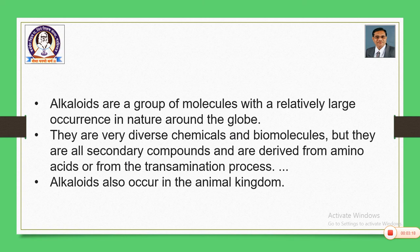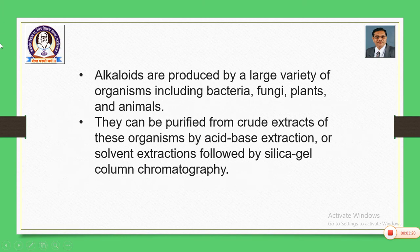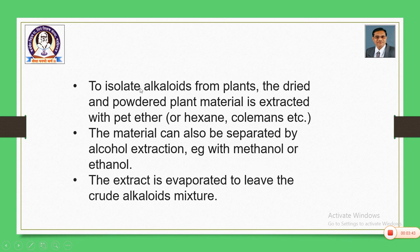Alkaloids also occur in animal ganglia. They are produced by a large variety of organisms including bacteria, fungi, plants, and animals. They can be purified from crude extracts of these organisms by acid-base extraction or solid extraction followed by silica gel column chromatography. To isolate alkaloids from plants, the dried and powdered plant material is extracted with petroleum ether, pet ether, or hexane or other suitable solvents.